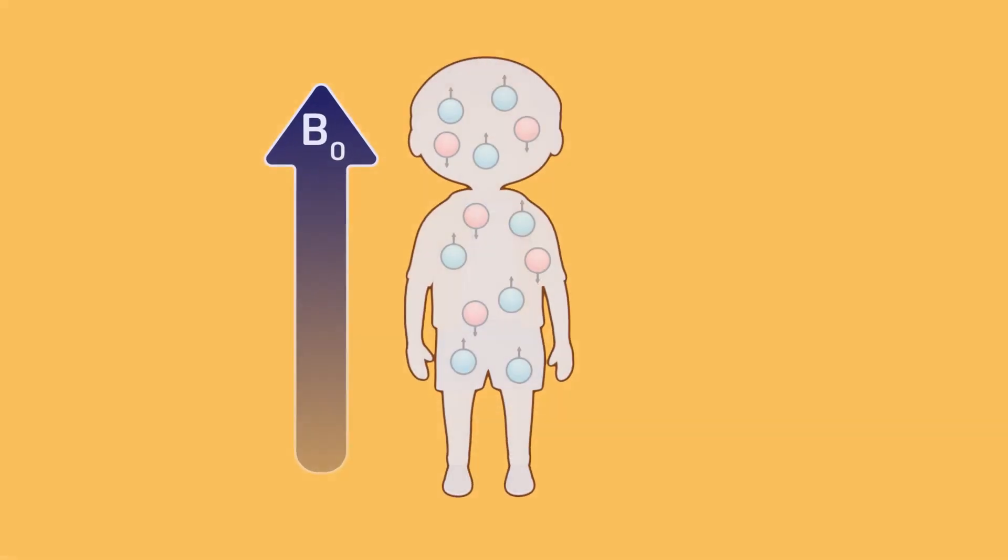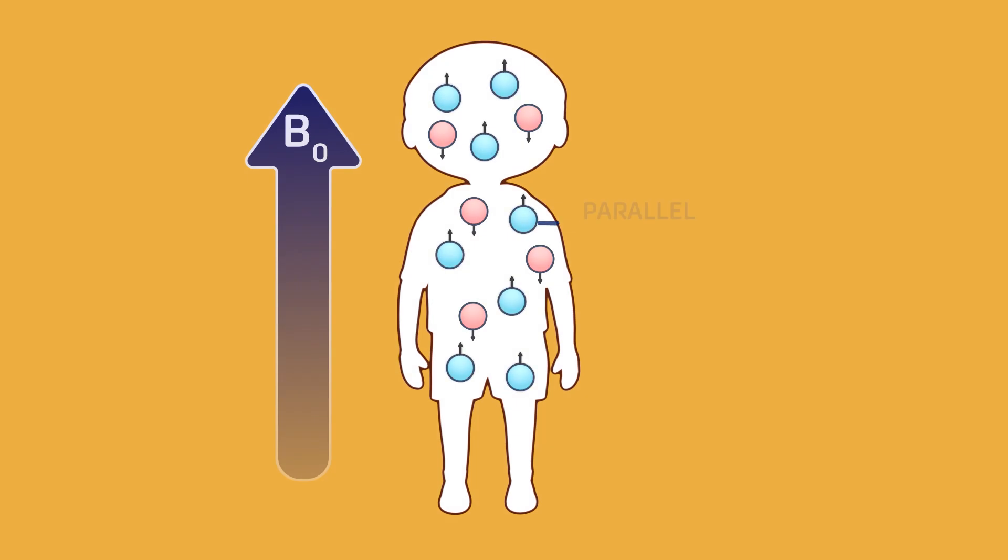When protons are placed within this magnetic field, they'll line up parallel or anti-parallel to the primary magnetic field, with a small majority aligning with the direction of the primary magnetic field, just going with the flow.